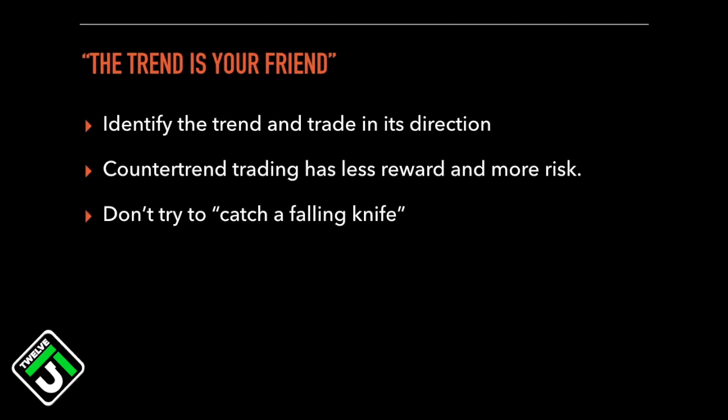Another way to identify an uptrend is noticing the candles trading above the stock's moving averages. Identifying the trend is the very first thing we look at when looking at a stock's chart, because we want to put the probability in our favor of producing a winning trade. Stocks tend to continue in the direction of the overall trend. A common saying in the industry is: the trend is your friend. If the overall trend is up, you should be taking long positions; if it's down, you should be taking short positions.